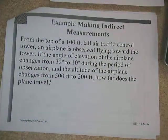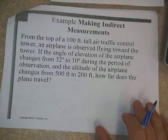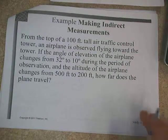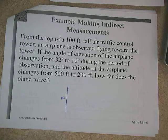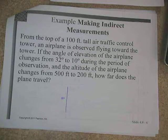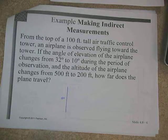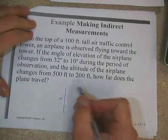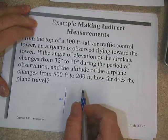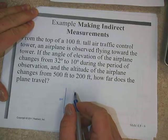All right, let's take a look at another one here. This time we have, it says, from the top of a 100 foot tall air traffic control tower. And before I read anything else, I'm going to stop and start drawing. So I've got a 100 foot air traffic control tower. So here's my tower. It's 100 feet. I'm going to go ahead and put that label on there right away. So it says an airplane is observed flying toward the tower. And it says the angle of elevation of the airplane changes from 32 to 10 during this period of observation. And the altitude of the plane changes from 500 to 200. And we want to know how far does the plane travel. So like I said, the key issue here for us is to be able to take that English word situation and translate that into a math situation.